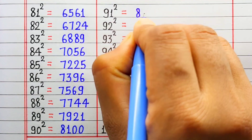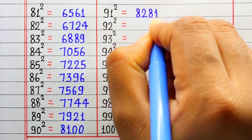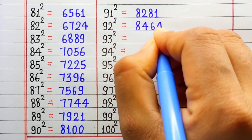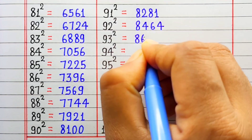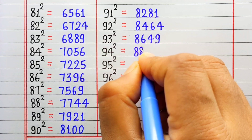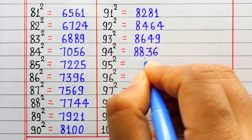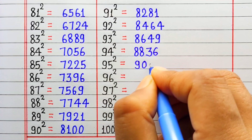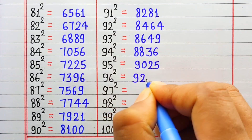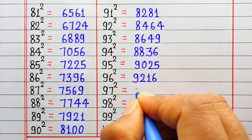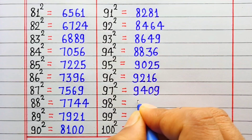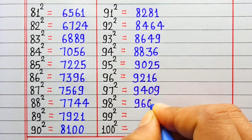Square of 91 is 8281. Square of 92 is 8464. Square of 93 is 8649. Square of 94 is 8836. Square of 95 is 9025. Square of 96 is 9216. Square of 97 is 9409. Square of 98 is 9604.